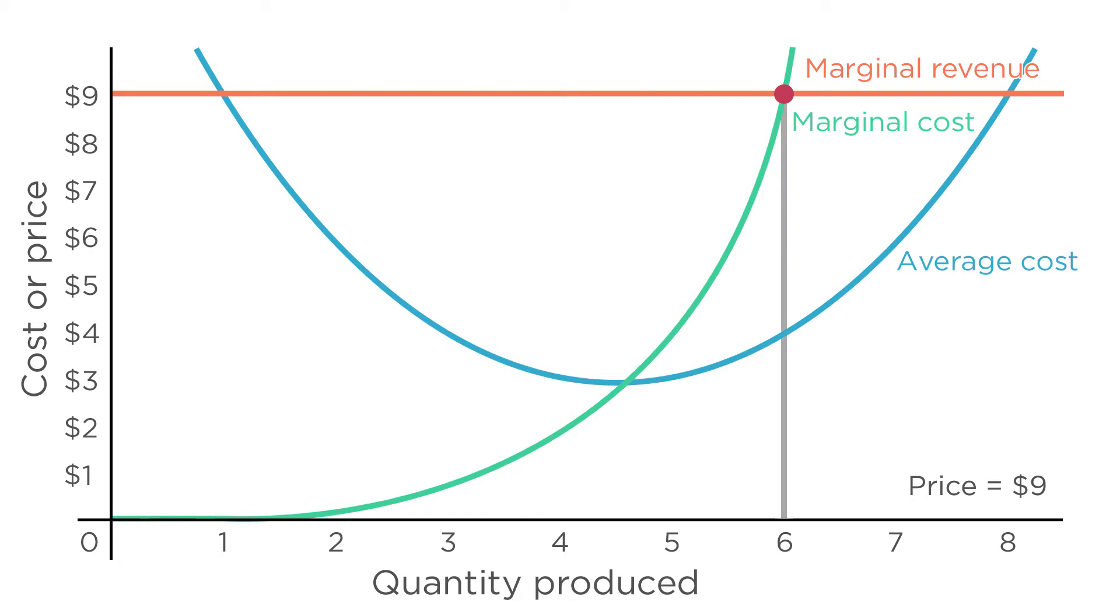Now, can we figure out total profits at this point? Absolutely. Profits equal revenues minus costs. Revenues just equal the number of units the firm sold times the price it sold them for. If it sells six units at $9 each, that makes six times nine or $54.